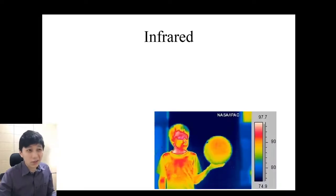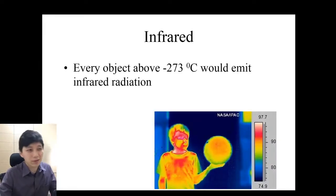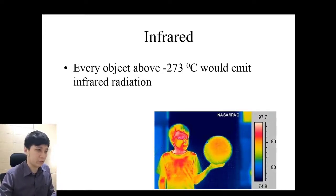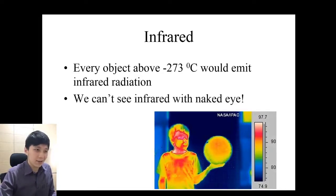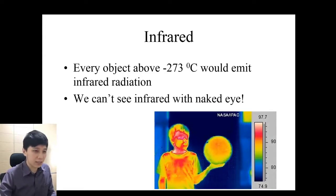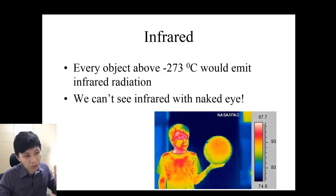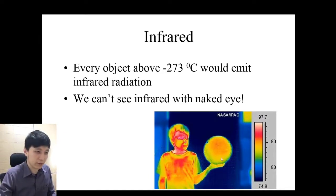As long as an object is above absolute zero in temperature, it will emit infrared radiation — so basically everything emits it. But we cannot see infrared with our naked eye, which is why there are cameras that allow us to visualize it.